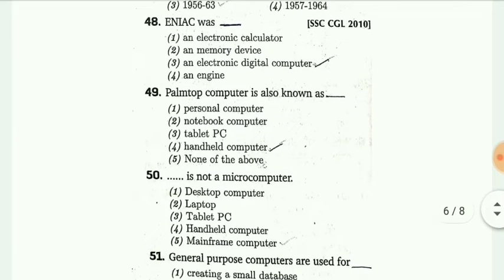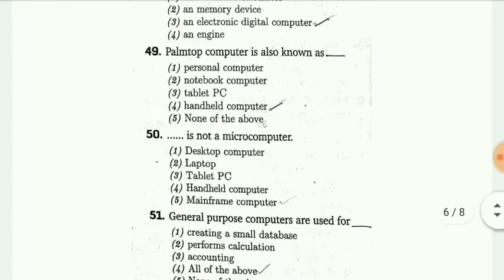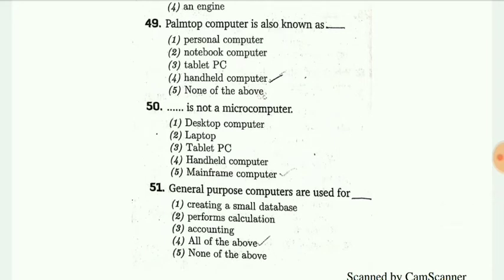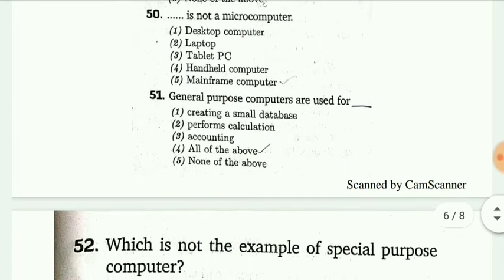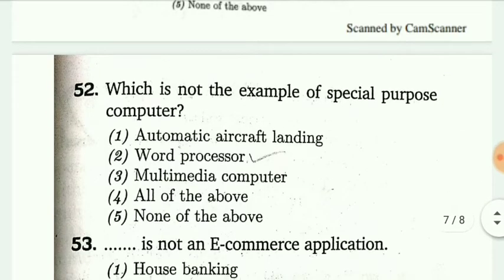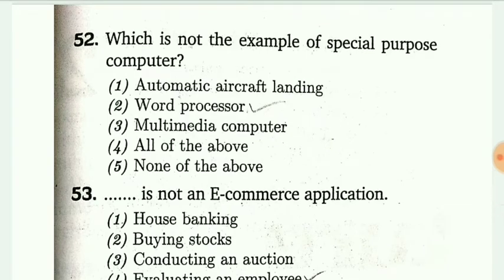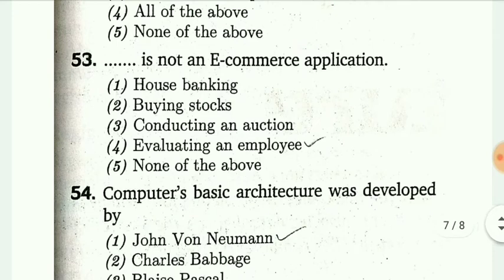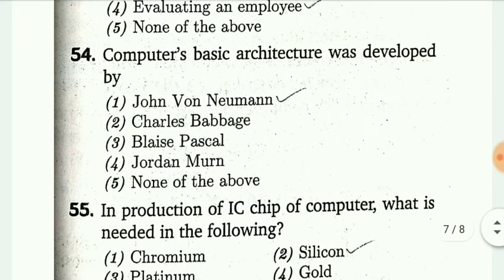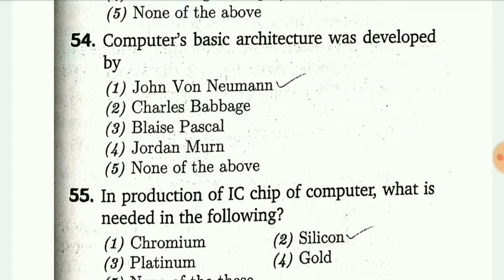ENIAC was an electronic digital computer. Palmtop computer is also known as handheld computer. Mainframe computer is not a microcomputer. Which is not an example of a special purpose computer? The answer is word processor. Dash is not an e-commerce application — the answer is evaluating an employee. Computer basic architecture was developed by John Von Neumann.